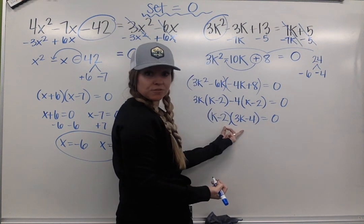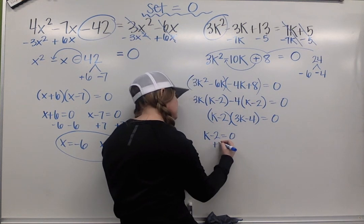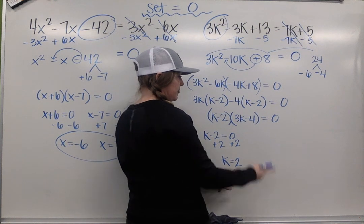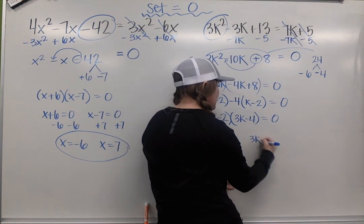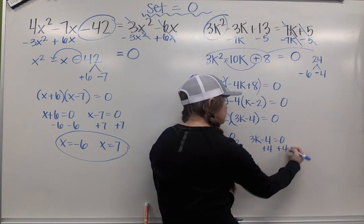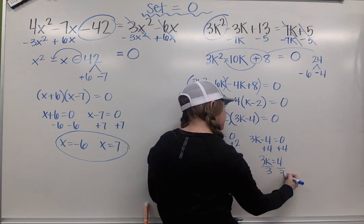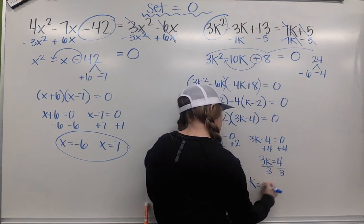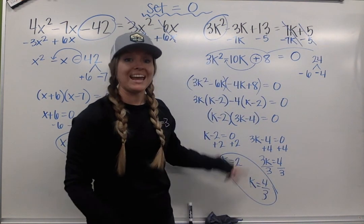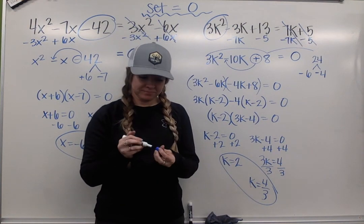Now I take each factor and set it equal to 0. So k - 2 = 0. Add 2 to both sides, and k = 2. Then I take 3k - 4 and set that equal to 0. I'm going to add 4 to both sides, so 3k = 4. Divide by 3, and k = 4/3. So my two solutions that will make this quadratic equal 0 are 2 and 4/3. Good luck with your solving.